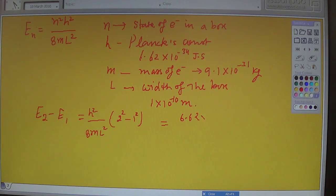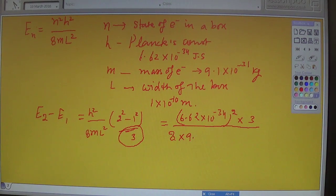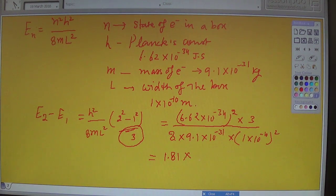That equals 6.62 times 10 raised power minus 34 joule second whole square times 3, divided by 8M, which is 9.1 times 10 raised power minus 31 kg. L square is 1 times 10 raised power minus 10 all square. After simplification, you will get 1.81 times 10 raised power minus 17 joules.